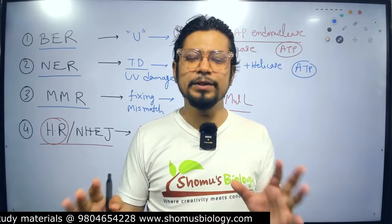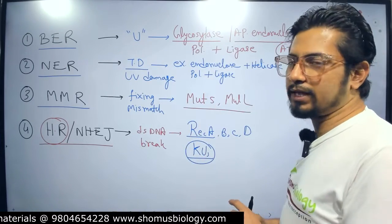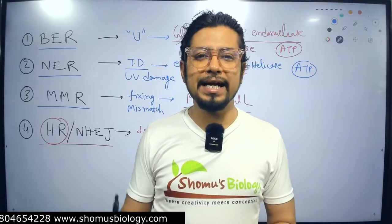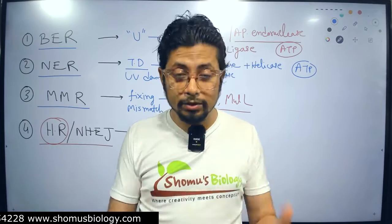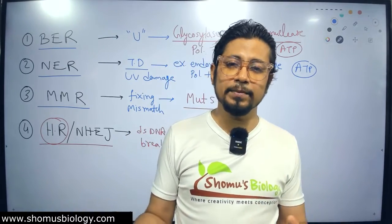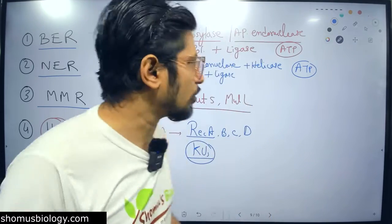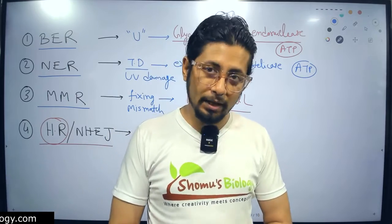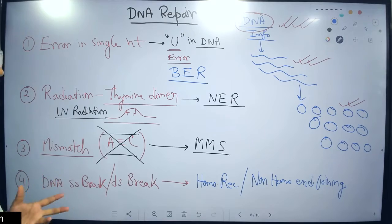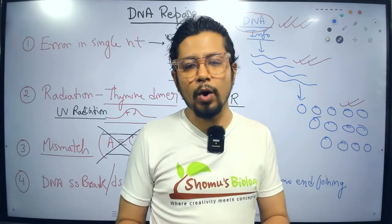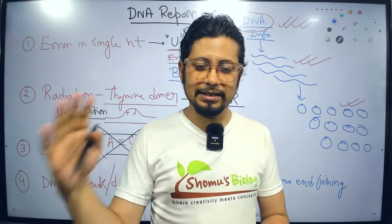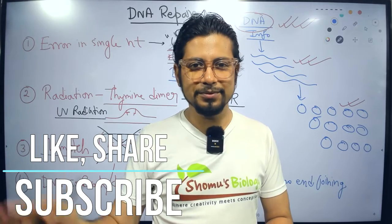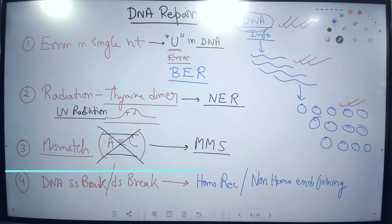This video sums up the idea about the types of DNA repair mechanisms: Base Excision Repair, Nucleotide Excision Repair, Methyl Mismatch Repair, and Homologous Recombination or Non-Homologous End Joining. If you want to understand individual DNA repair mechanisms in detail for your MSc or CSIR-NET exam preparation, watch all the videos in this series. If you like this video, please hit the like button, share it with your friends, and subscribe to this channel to get more videos in the future. Thank you. Bye.